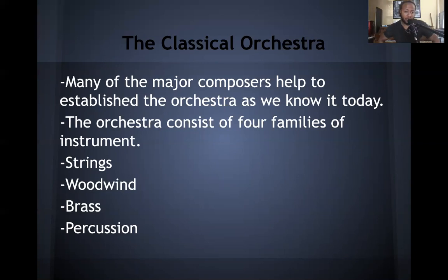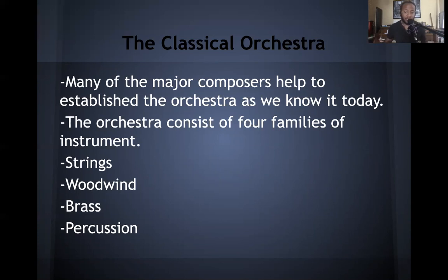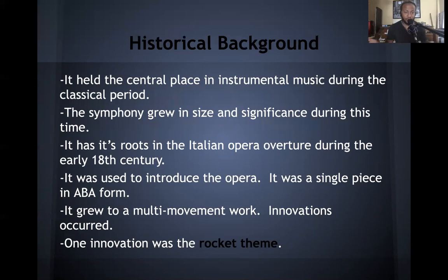Then we have the brass, which in some ways is fairly homogenized but has definite differences between instruments: trumpets are more of a soprano instrument, trombones are more tenor, tuba is the bass part, and French horns round it out. Last but certainly not least is percussion — primarily the timpani or kettle drums. In the early classical period, the percussion section was really just the timpani.